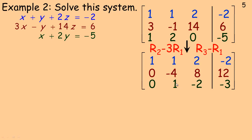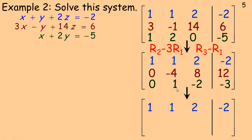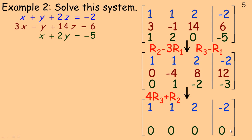Now I want to get a 0 in row 3 where the negative 4 is. I have to use rows 2 and 3 — not row 1 — to preserve the zeros. Multiplying row 3 by 4 and adding to row 2: 0 plus 0 is 0, 4 plus negative 4 is 0, negative 8 plus 8 is 0, and negative 12 plus 12 is 0. We get a whole row of zeros. Notice that the row 2 numbers are all divisible by negative 4, so we can simplify by dividing — row 2 becomes 0, 1, negative 2, negative 3.